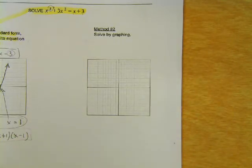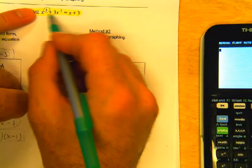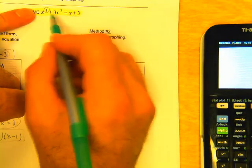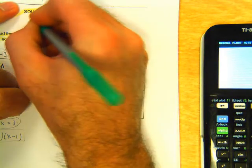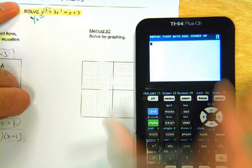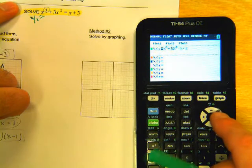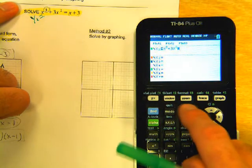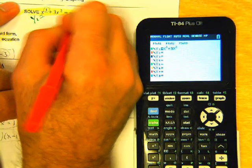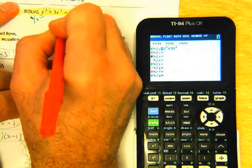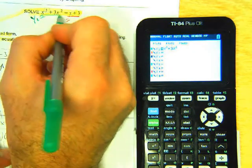And so here's what we're going to do. For graphing, we are going to leave this equation just the way it is. And we are going to put the left-hand side of the equation into y1 and we are going to put the right-hand side of the equation into y2.